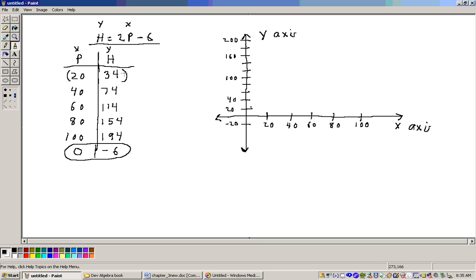Here's the first point, 20, 34. So, we go over 20 on the x-axis, up 34. Well, here's 20, and here's 40. So, 34 is in between here, maybe a little closer to 40. The next one's 40, 74. Go over to 40, up 74. Here was 80. Here was 60. So, 40, 74 would be right about here. Then, the next point would be at 60, 114.